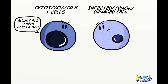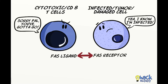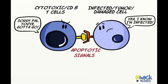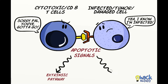Cytotoxic T lymphocytes, or CD8 T cells, cause apoptosis of infected cells or tumor cells by FAS ligand and FAS receptor interaction. Many cell types express a receptor called the FAS receptor and cytotoxic T cells express FAS ligand. These cytotoxic T cells bind to the FAS receptor on tumor cells or infected cells through their FAS ligand, and this interaction may produce apoptotic signals through two pathways: the extrinsic or the granzyme-perforin pathway.